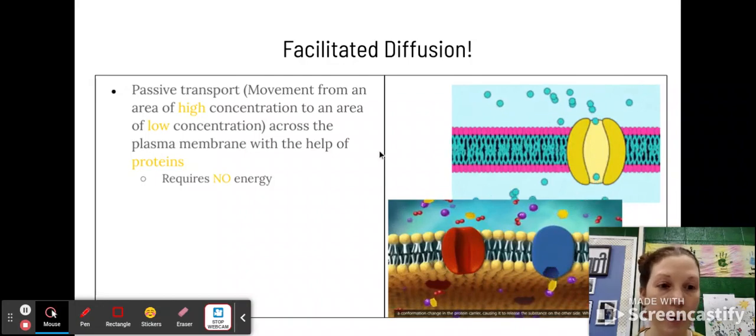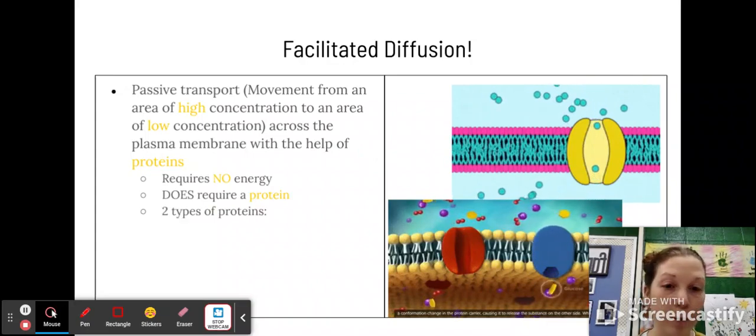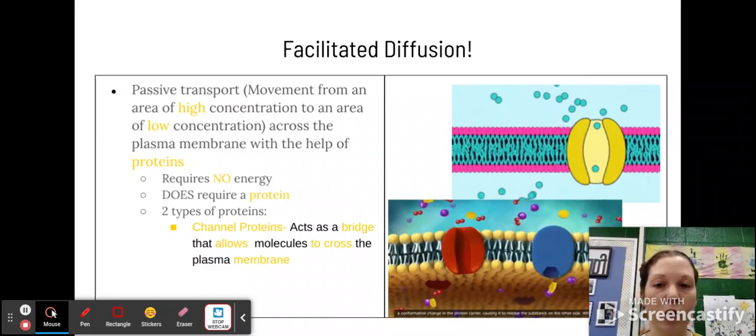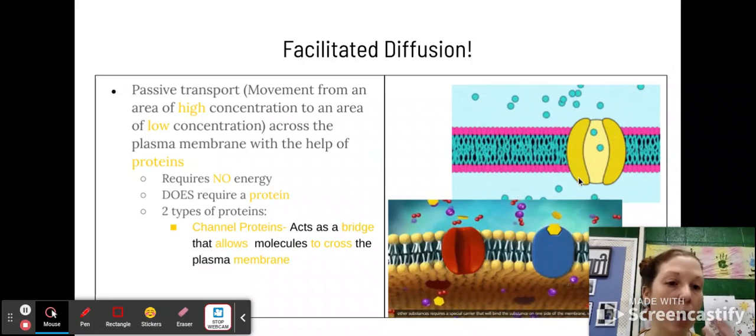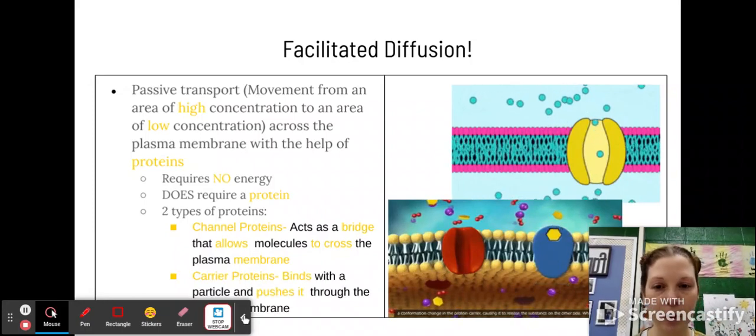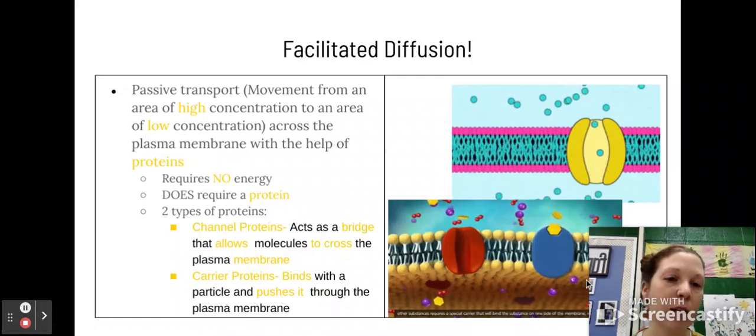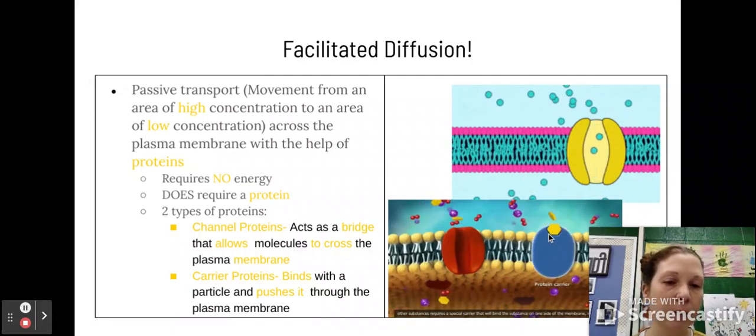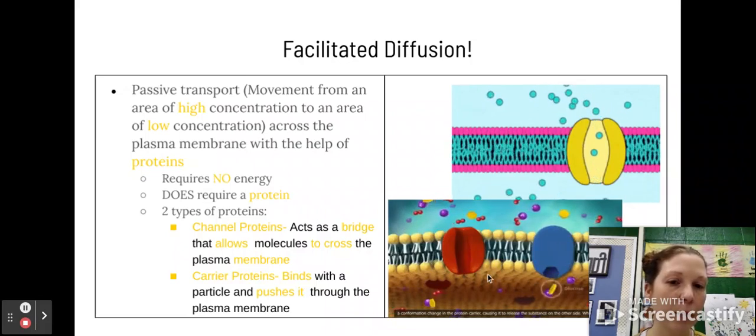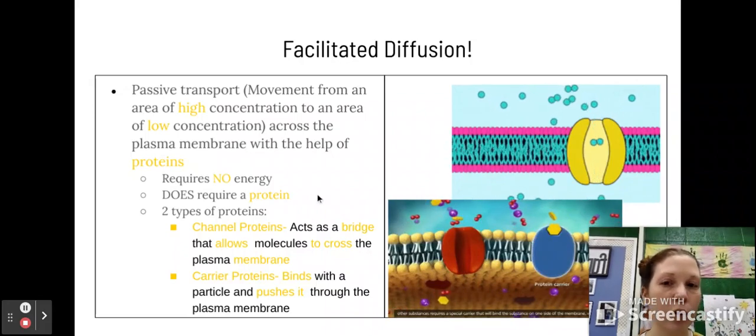Again, it requires no energy. If it's passive, it's no energy, but it does require one type of protein. There are two options here for the proteins that could be used. The first one is a channel protein, and it just acts like a bridge and allows molecules to cross the membrane. So that would be like this yellow one up here. It's always open, ready to go for particles to go in and out of the cell. But we also have what are called carrier proteins, and these will bind with a specific particle and push its way through the plasma membrane. So that would be this blue one here at the bottom. As you can tell, that molecule or particle could not move through the channel protein. It attaches to the carrier protein, and it will push its way through the surface.